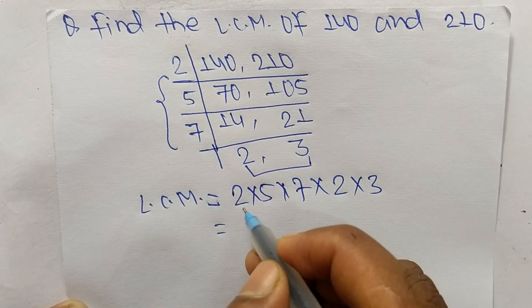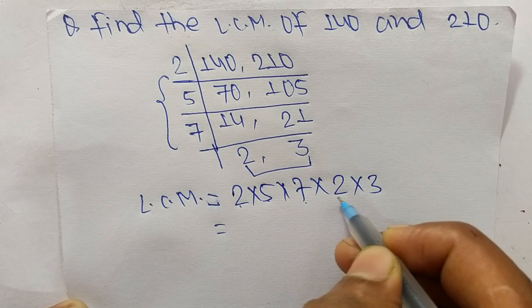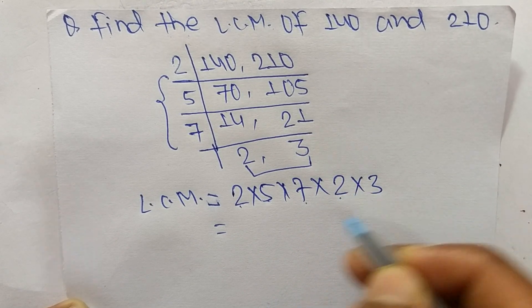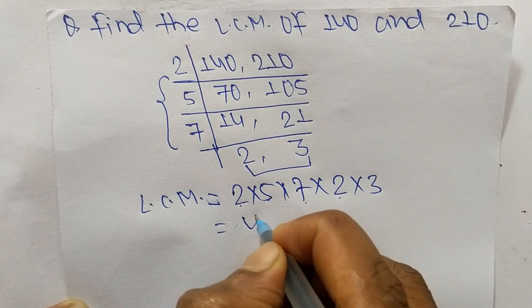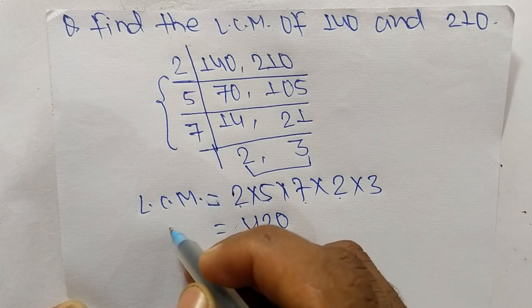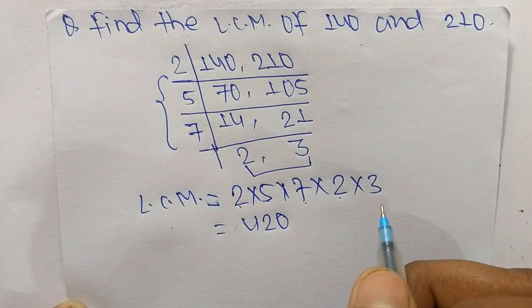So 2 times 5 means 10, 10 times 7 means 70, 70 times 2 means it is 140, 140 times 3 means it is 420. So 420 is the LCM of 140 and 210. So this much for today